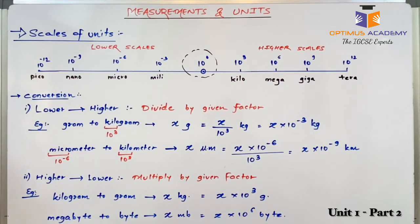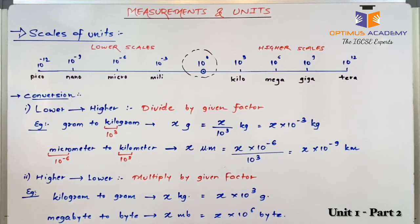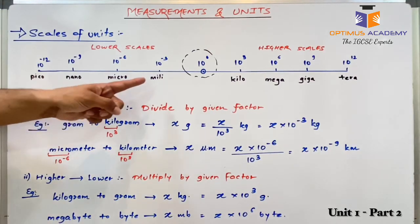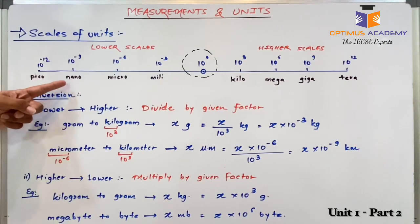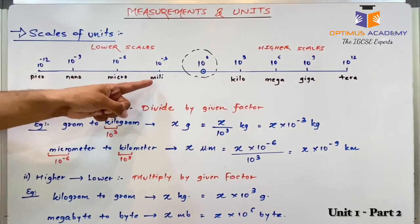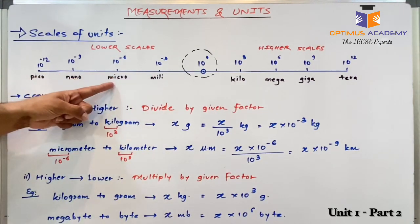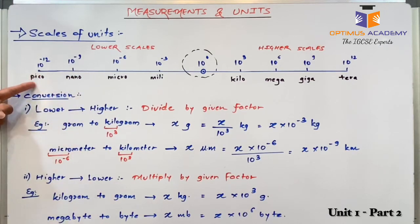So for every unit, we may have these prefixes based on the value of the number. For example, we may have milligram, microgram, nanogram, picogram, or millimeter, micrometer, nanometer, picometer, etc.